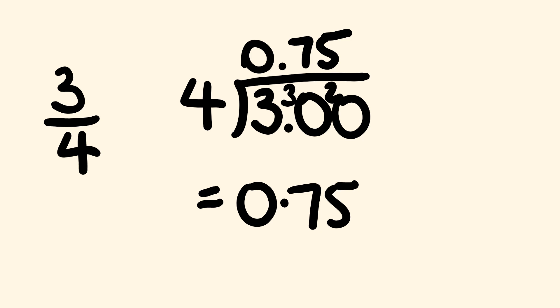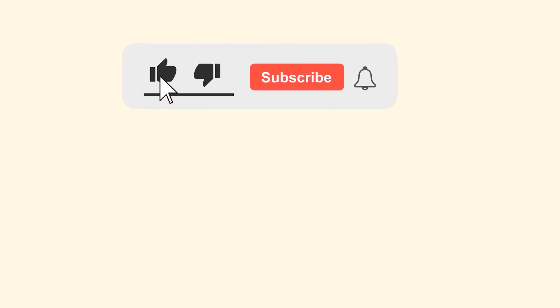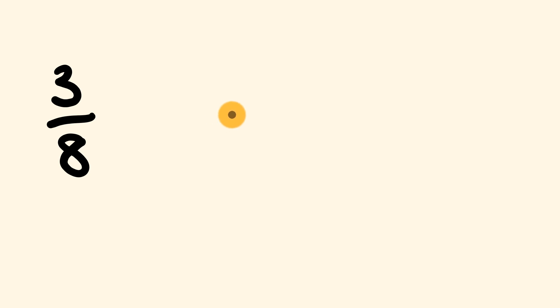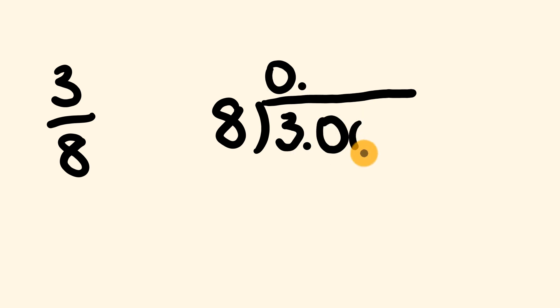Let me clear some space and we'll have a look at another example. And by the way, if you like this video so far, hit the like button and remember to subscribe. For the next example, we'll see what the fraction 3 over 8 is — 3 eighths — as its decimal. So we do the same thing: we set this up as a division problem. We have the 8 on the outside that we're dividing by and we have the 3 here. The first thing is we know that 8 is not going to go into 3, so we'll have a 0 here and we put our decimal places with a couple of zeros.